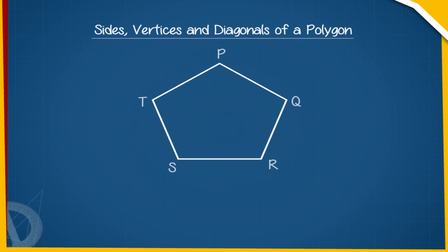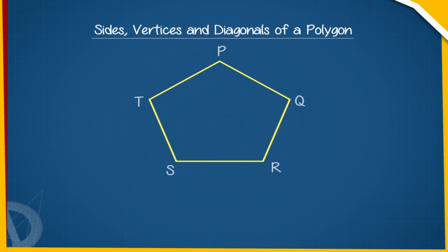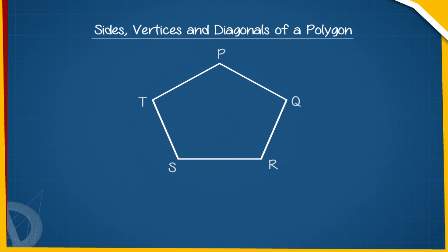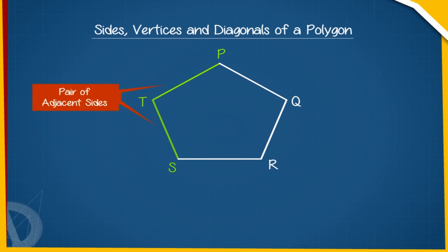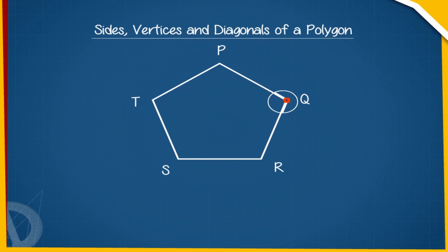Look at the polygon PQRST — it is made up of five line segments, which are called the sides of the polygon. Line segments PQ, QR, RS, ST, and TP are the sides of polygon PQRST. PQ and QR, QR and RS, RS and ST, and ST and TP are sides next to each other and are called pairs of adjacent sides.